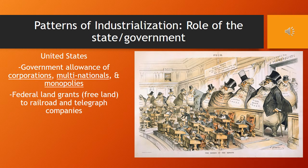In the United States, the federal government allowed for the development of corporations, multinationals, and monopolies to form. These new economic developments pushed American industrial development to new heights throughout the late 19th century. Additionally, the federal government extended federal land grants—essentially free land—to railroad and telegraph companies, which also contributed to America's increased industrial development.